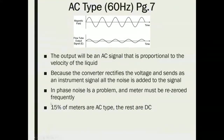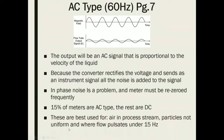About 15% of all mag meters out there are AC type; the rest are DC type. AC meters are best used for air in a process stream, applications where the particles are not uniform, and where we have flow pulsations under 15 Hz.